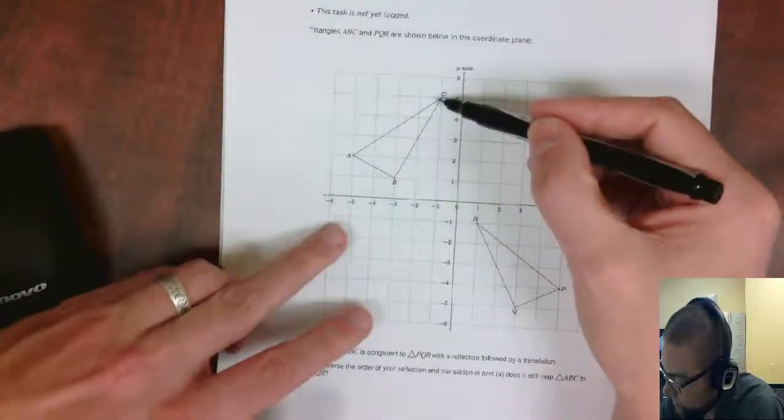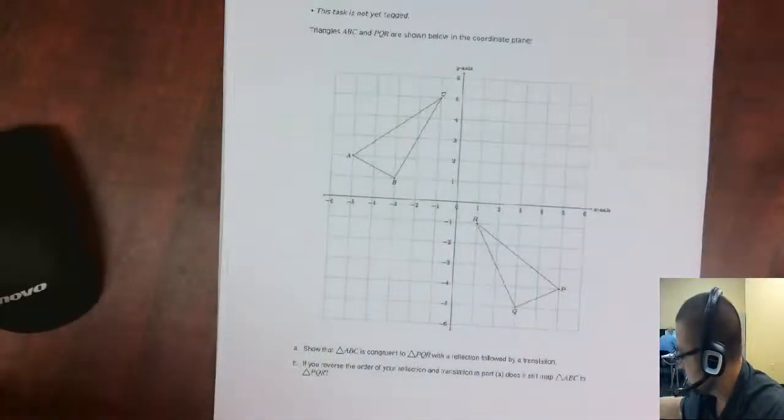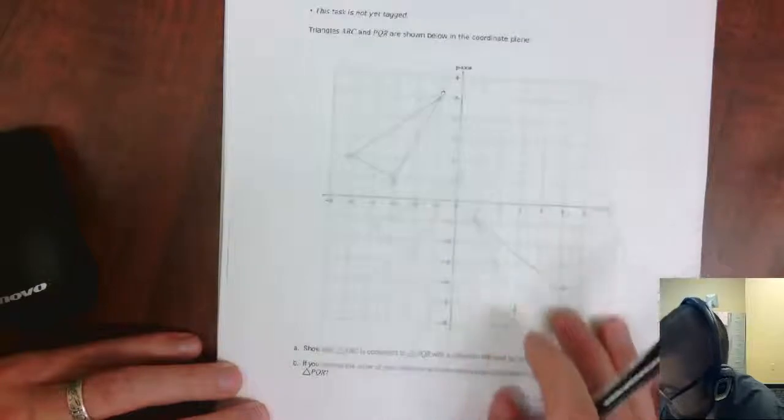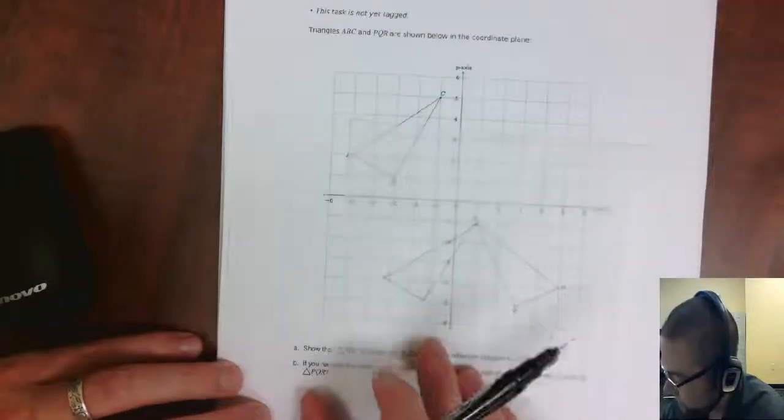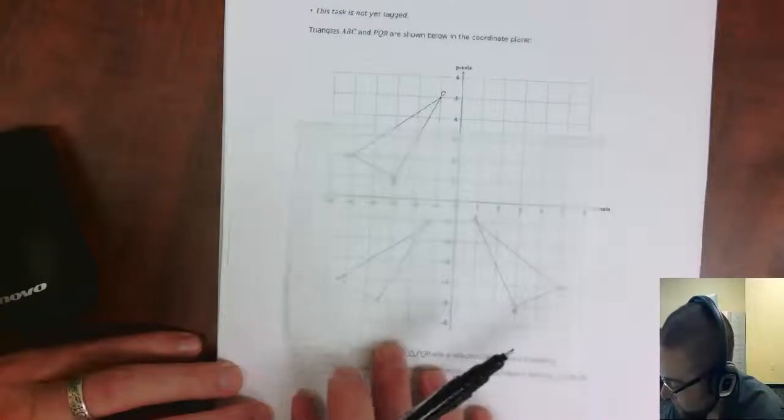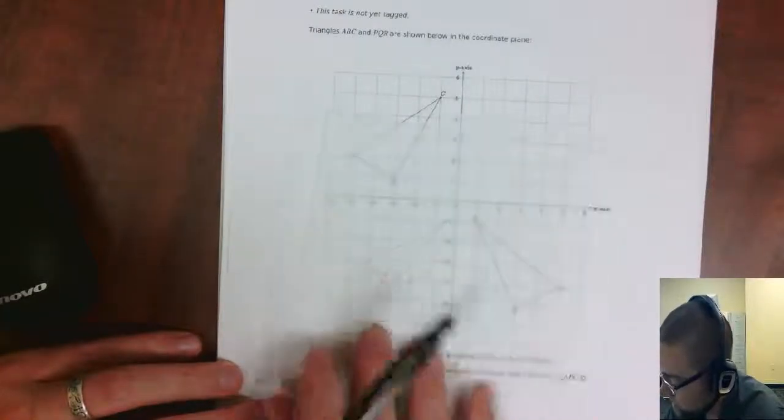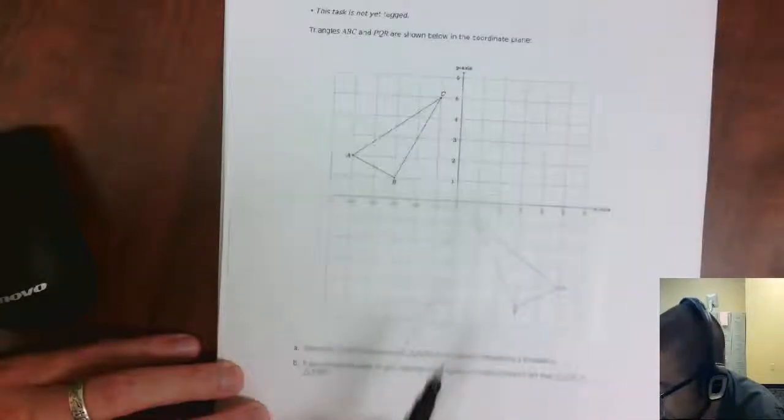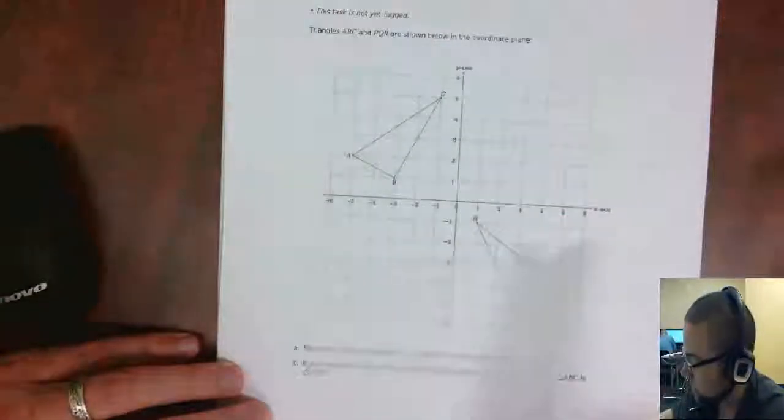So we're going to translate. I think the best way is to, let's see, if I translate, I could translate all the way over to there and then reflect it. Or I could translate down to here and then reflect it across the y-axis. I'm going to go ahead and do something a little different. I'm just going to translate it all the way so that C is directly onto R.